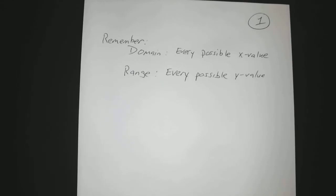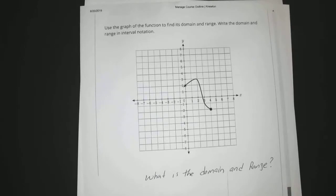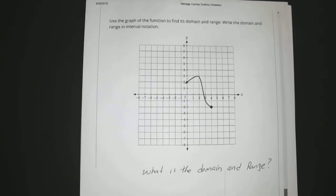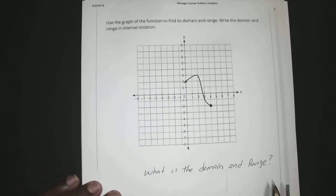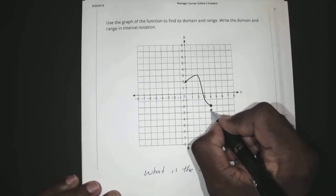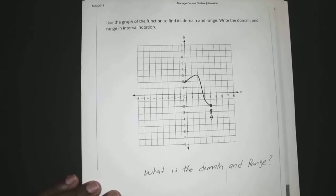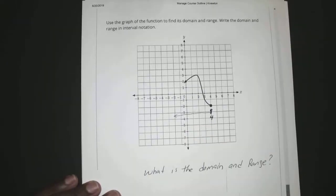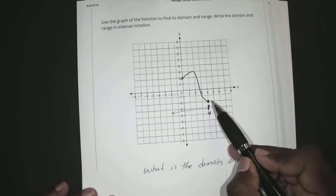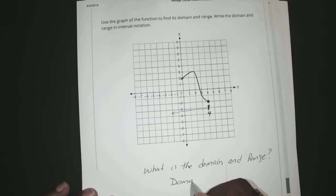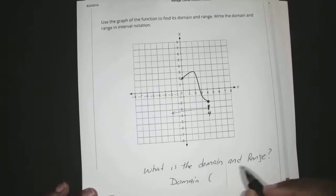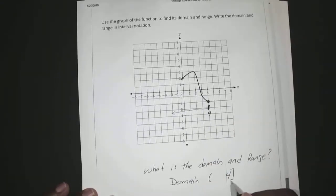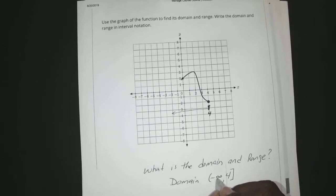If we go to this one, what is the domain and range? If we look for every possible x value on this graph, we know it starts at x equals 4, and it goes all the way — if you notice, that's an arrow on the end, so that means it goes on forever to the left. Since it's a closed circle here, your domain is going to be from 4 on the right with a bracket, and since it goes on forever to the left, it goes right to negative infinity.